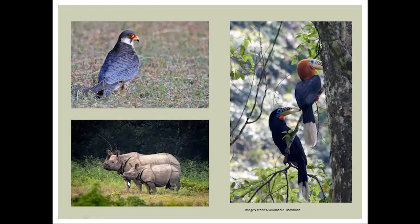One also finds the one-horned rhinoceros in this region. The Kaziranga National Park in Assam is famous for the greater one-horned rhinoceros, or the Indian rhino. It is a vulnerable species that prefers to live in grasslands. Its skin is thick and gray in color, and it has a single horn on the head region, hence the name greater one-horned rhinoceros.